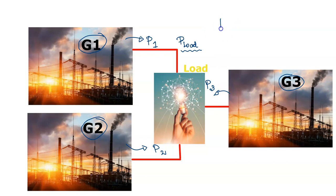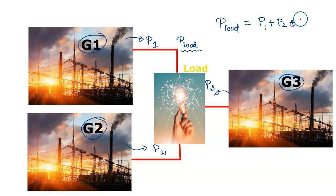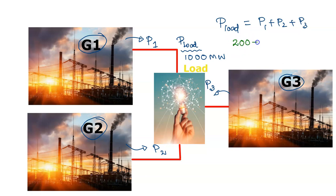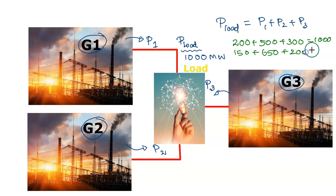Our problem is that the load demand should equal the total generation from these three units. Suppose if we have a total load of 1000 megawatts, we can have many different combinations such as 200 plus 500 plus 300 for P1, P2, P3 to achieve this thousand, or 150 plus 650 plus 200. Similarly, there are many combinations possible.